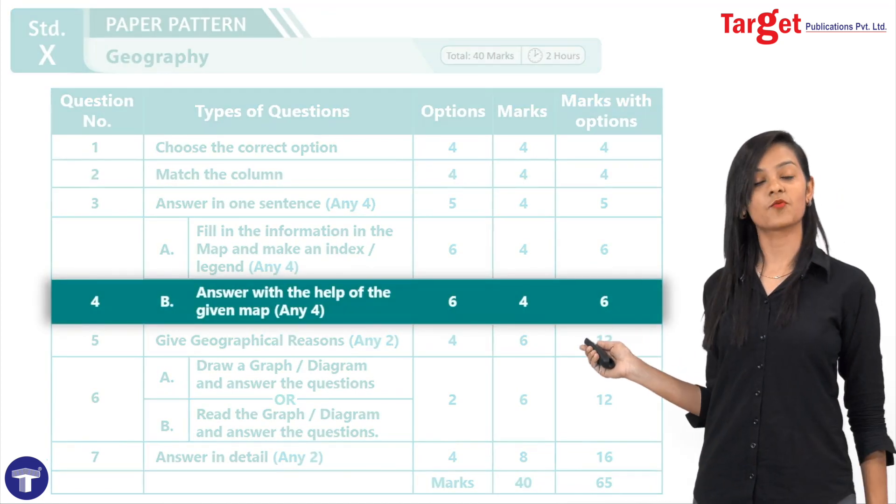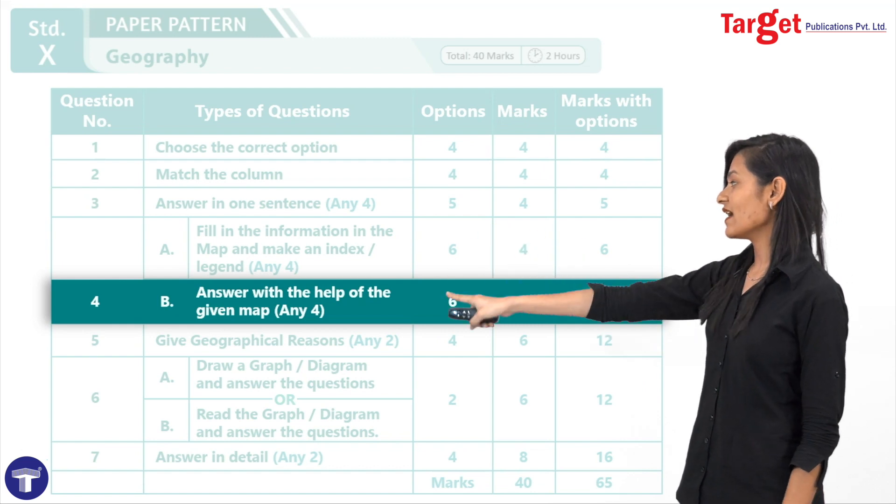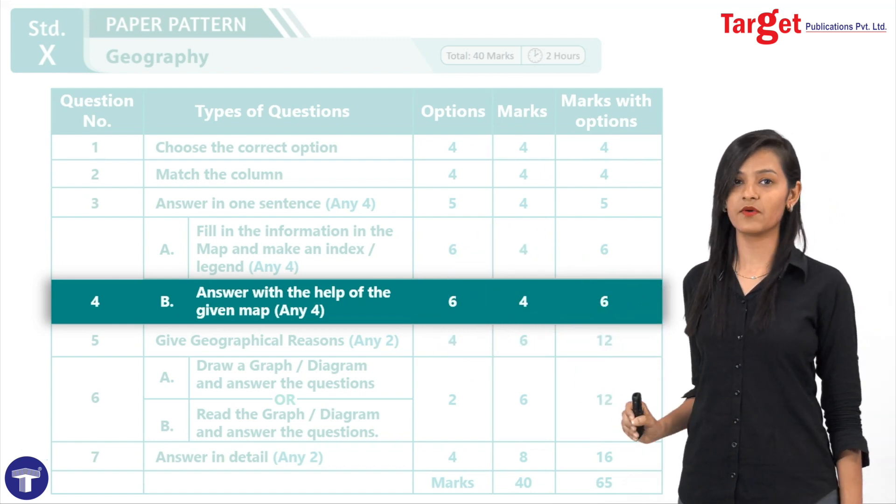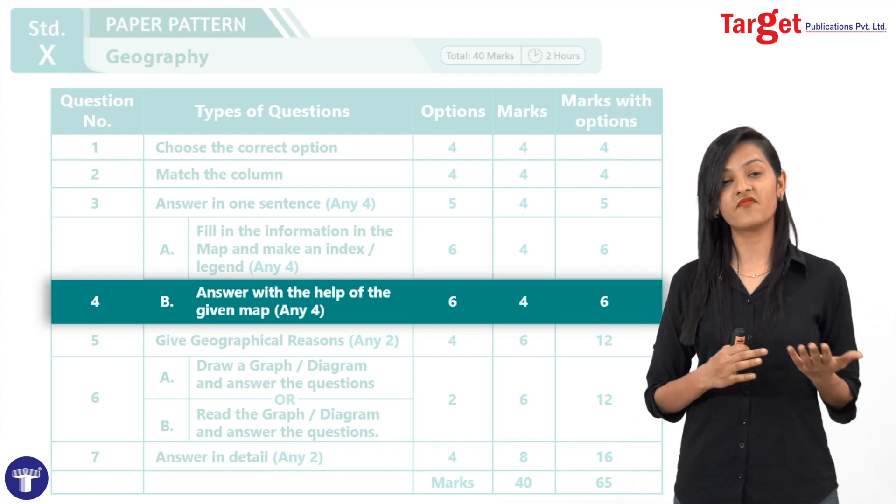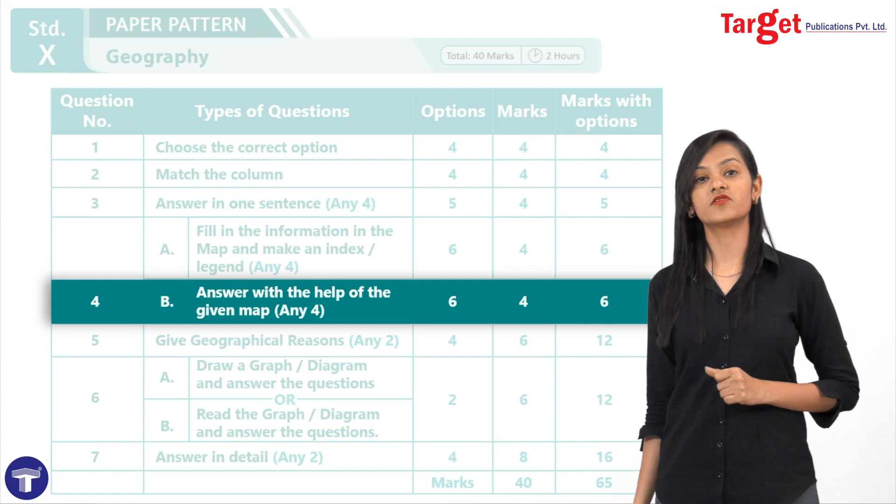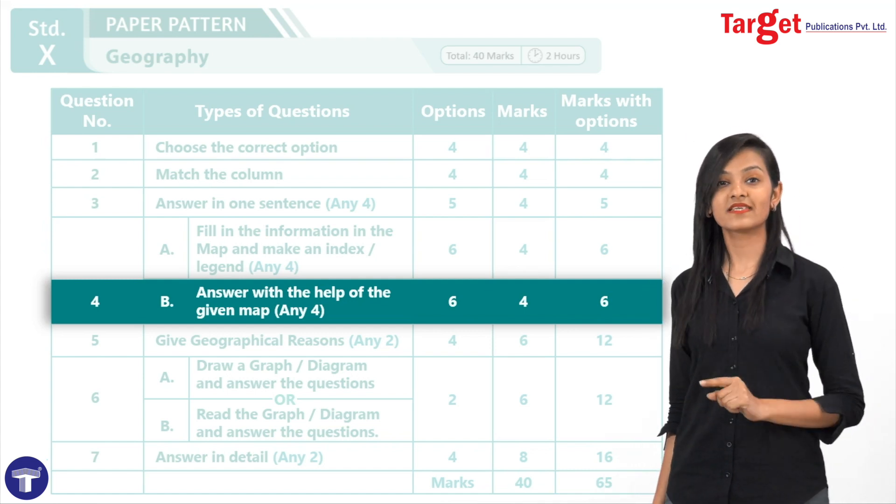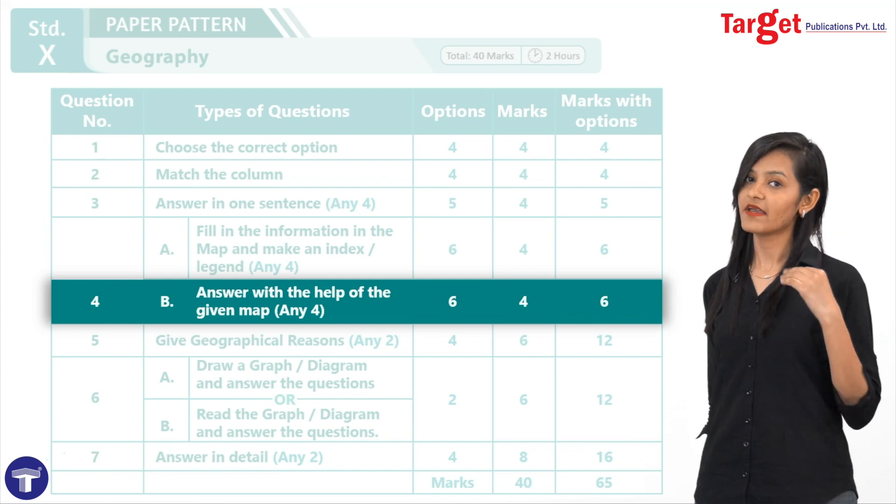Now, next is question number 4B. Question number 4B is, answer with the help of the given map. Here, you will be given a map already, a filled map. You have to observe the map and answer the questions. Also here, there will be 6 questions given, out of which, you have to opt for any four.